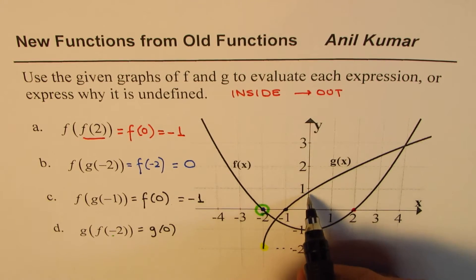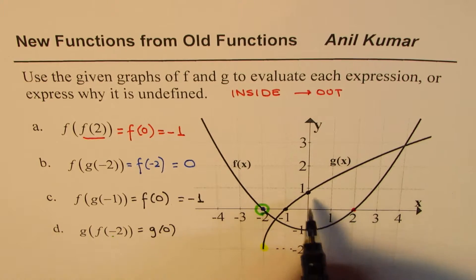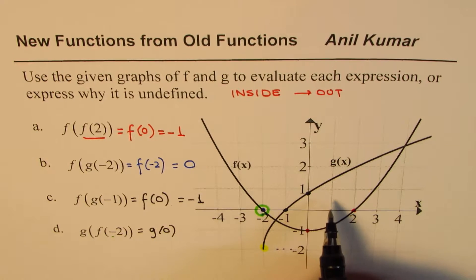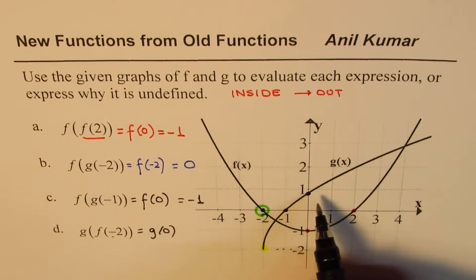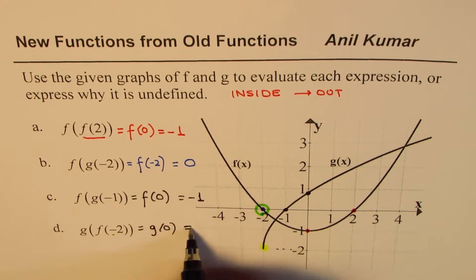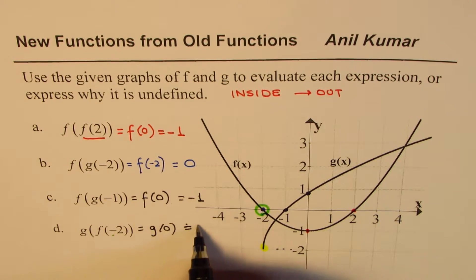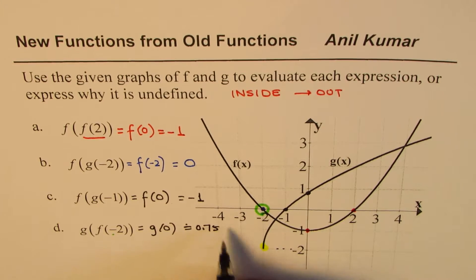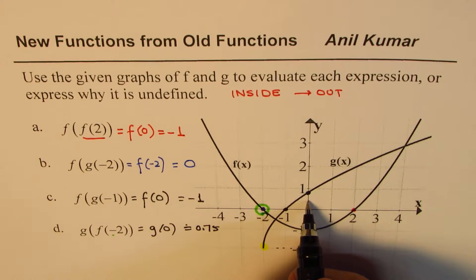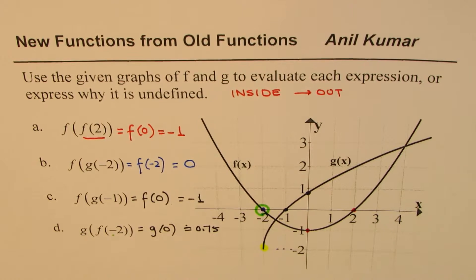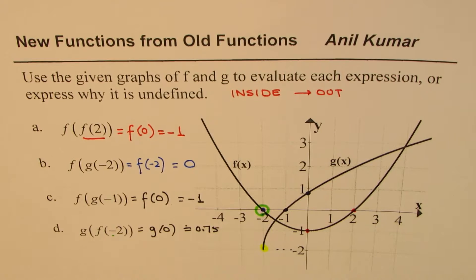So for this square root function, g(0) is this value which you cannot read accurately from the graph but you can estimate. So we say approximately it is less than 1. So let's say 0.75, one quarter. I am assuming this to be half of half. So that is the approximate value which I assumed.